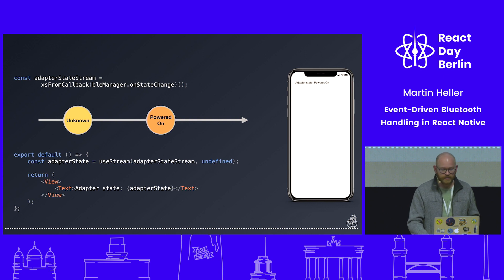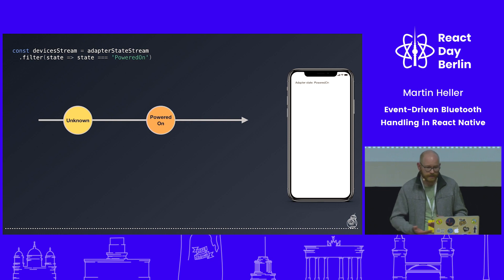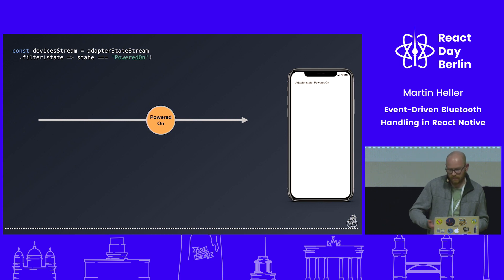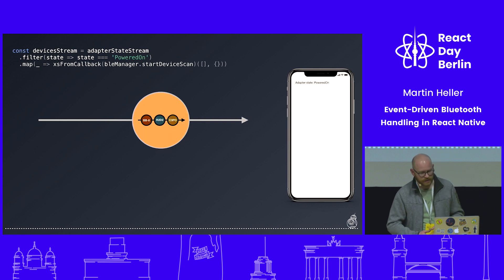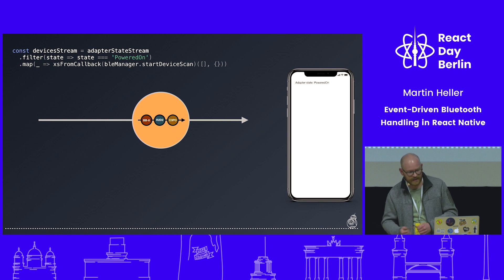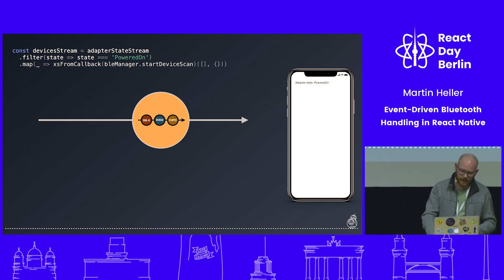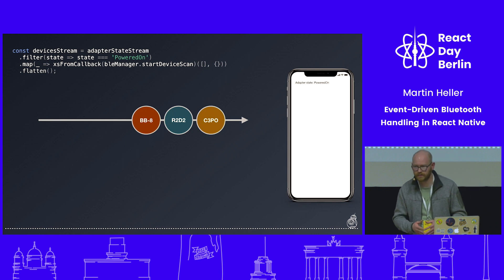The adapter state is maybe interesting from a development perspective, but not that relevant for users. So let's look at how to show devices — the next step is searching for devices we want to use. We take the same stream of states and filter for 'powered on' states, since those are the only relevant ones. We then take a function called startDeviceScan and create another stream from its callbacks. We get a stream of streams of devices, so XStream has a function called flatten, which flattens that down to a stream of devices — and we're ready to show them as buttons in our UI.